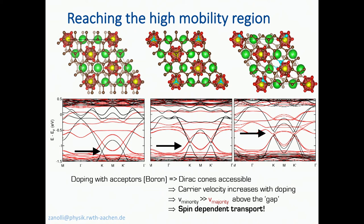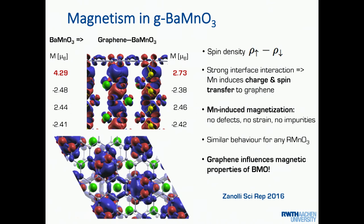Also, with doping, the velocity of the carrier improves, so there is an extra bonus for the mobility here. So, now, it's quite clear what happens from the electronic point of view. There is some charge that goes from the manganese atoms into the graphene.